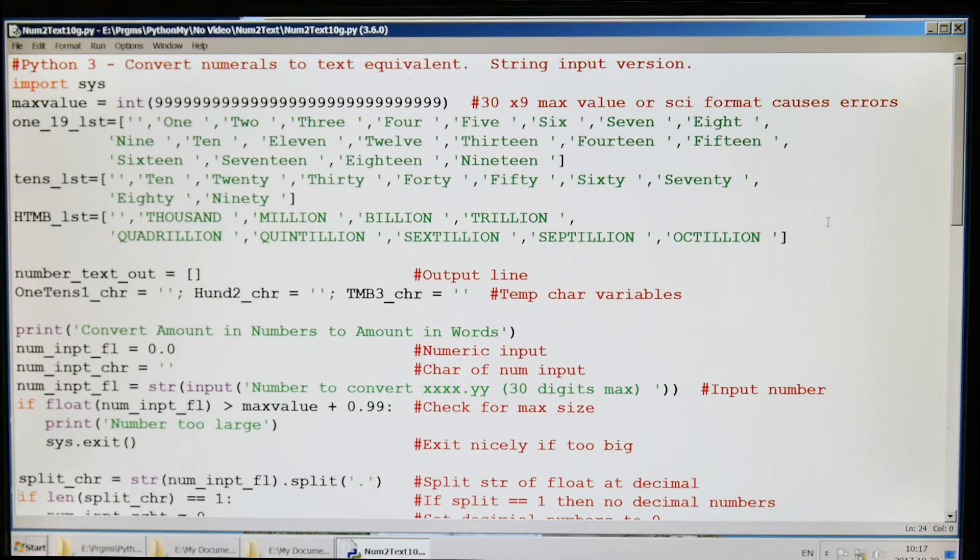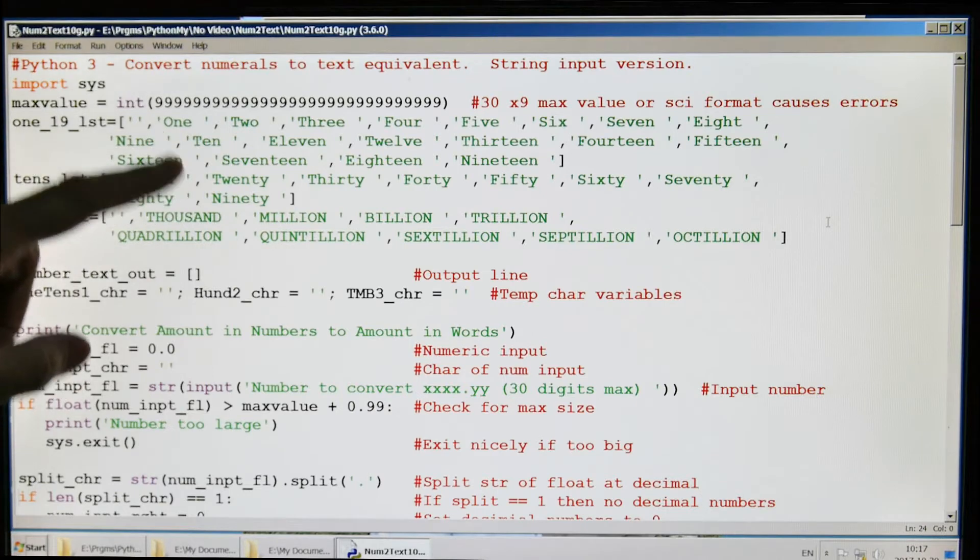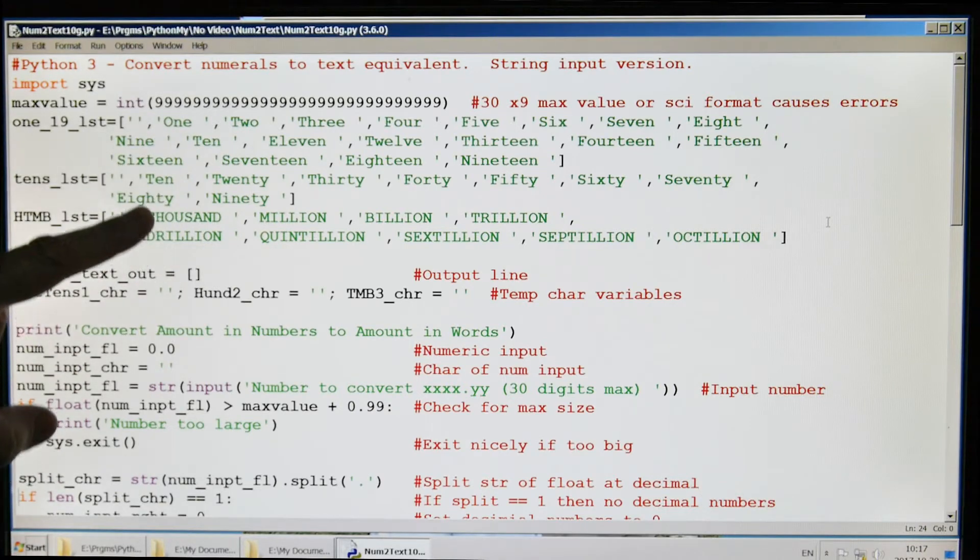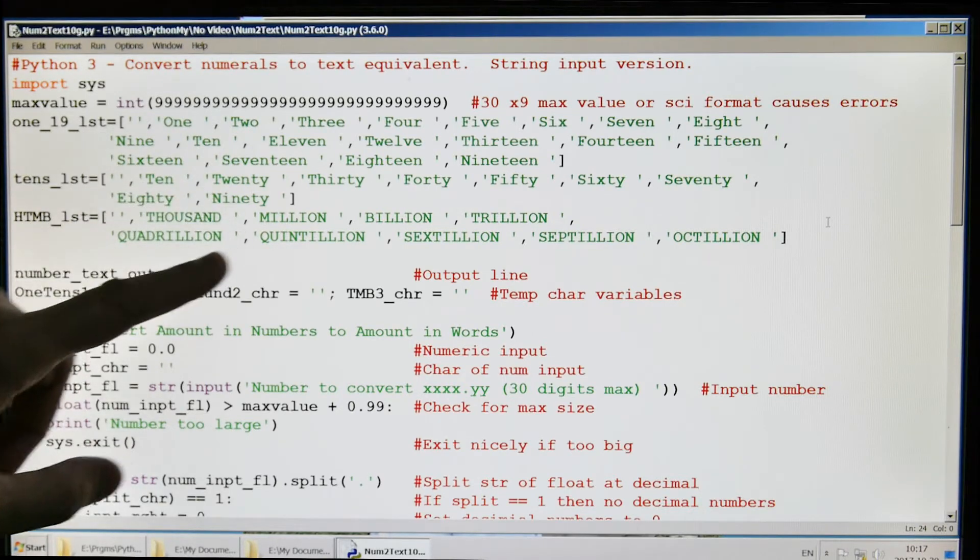I won't go into all the detail—you can see the code here. I've got an array of numbers, I got an array of the higher level things: 10, 20, 30, 40, 50, and then thousand, million, billion, and so on, trillion.